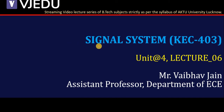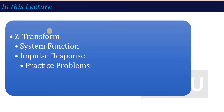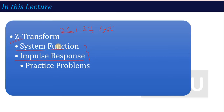Hello everyone, I welcome you all to the video lecture series of Signal Systems. The subject code is KEC403 and this is lecture number 6 of unit number 4. In the previous lecture we covered inverse Z-transform, where we learned using partial fractions how to calculate the inverse Z-transform. From this lecture we are going to talk about important analysis using Z-transform, that is the LSI system, starting with Z-transform. We will talk about what the system function is and how to calculate the impulse response.